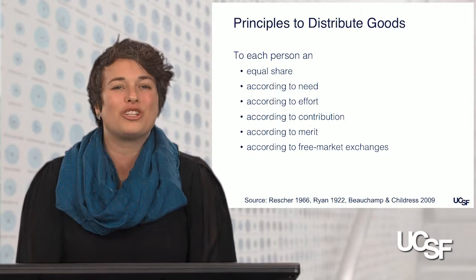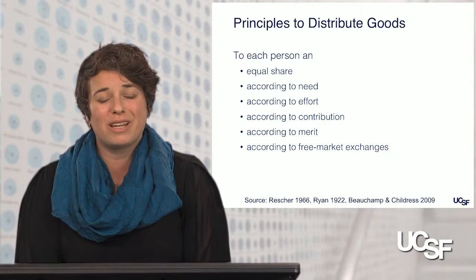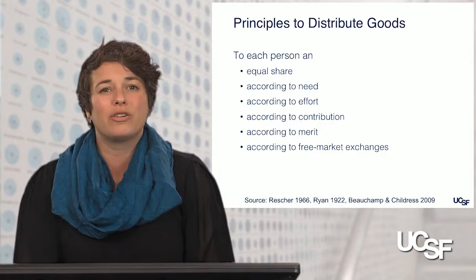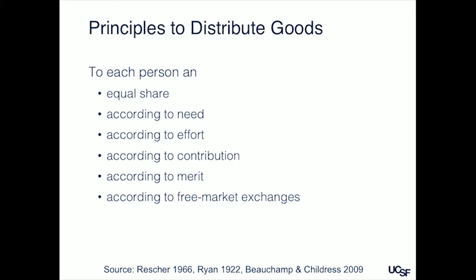There are a lot of goods to distribute in society, and health is a fairly complicated one to think about. First, think about something as simple as a plate of cookies with a horde of hungry toddlers. One way to distribute those cookies would be everybody gets an equal share. Another would be according to the free market, insofar as toddlers are capable of that. There are also other ways: according to need, effort, contribution, or merit. Take a moment and think about which of these basic ways to distribute goods feels most like the way you think about things.